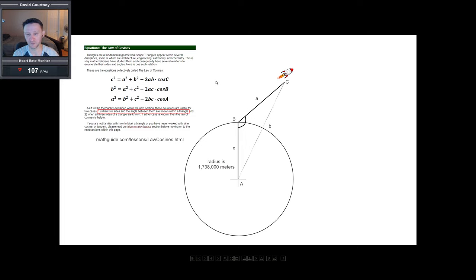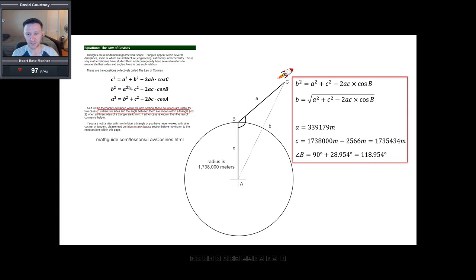If you do a search for the law of cosines, you can find out all kinds of information about it online. But I got this one from mathguide.com. And it explains that there's a couple of cases where using the law of cosines comes in handy. And one of those cases is exactly what we have right here when the two sides and the angle between them are known. And that's exactly what we have here. We have two known sides and we have an angle between them. So we're going to use the law of cosines to calculate what the length of side B is.